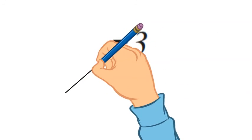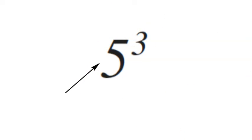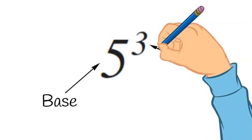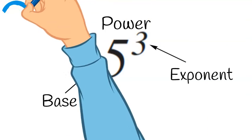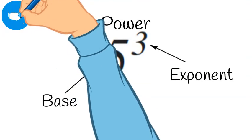Let's talk about the parts of the power. The number that is repeated, or the factor that is repeated, is called the base. The number of times it's repeatedly multiplied is called the exponent, and the whole thing is called the power.